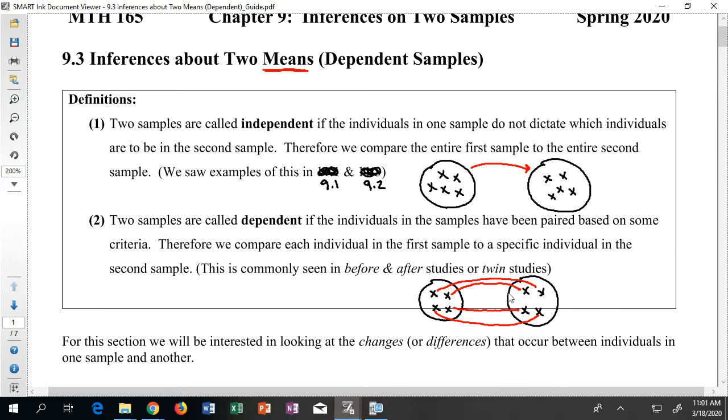Maybe I want to do a study that compares something like a before and after. For example, at the end of the semester, I might want to test people's exam one scores versus their final exam scores. It would make sense to do a comparison based on individuals being paired with themselves. It wouldn't make sense to compare your test scores to your neighbor's test scores. We'll often see this done in before and after studies or in what we call twin studies.